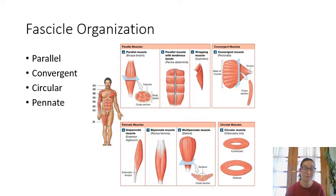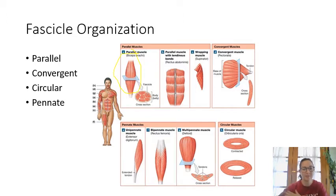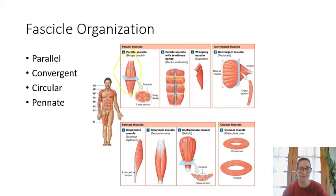We should briefly cover fascicle organization. Fascicles are bundles of muscle fibers, and those bundles can take on different shapes. Biceps brachii has a parallel fascicle organization — all fascicles run in a parallel formation. Your abdominal muscles also have parallel fascicles, all going in one direction.